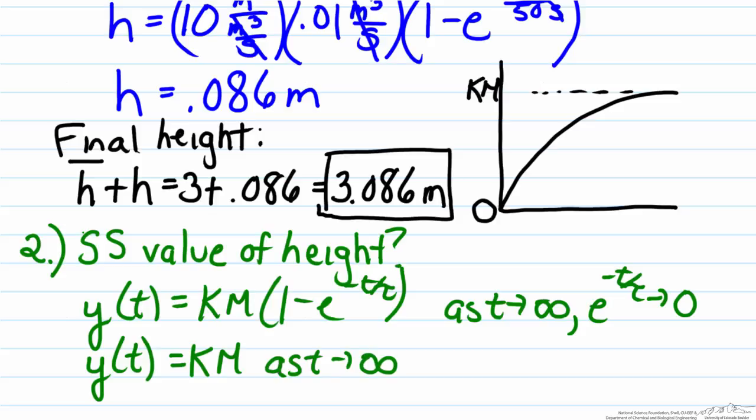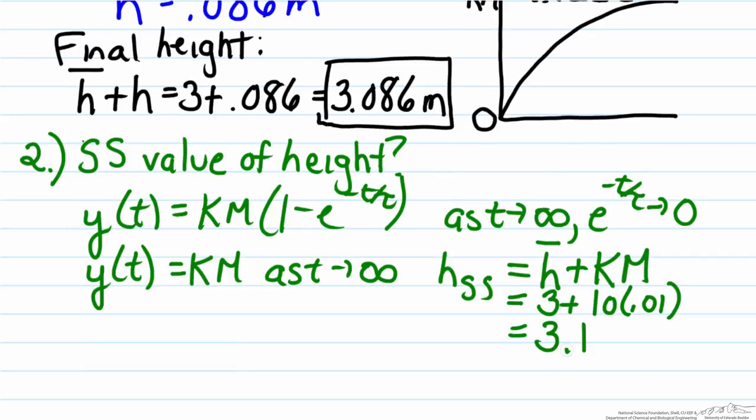In other words y is going to equal k m as t approaches infinity. So what that means is that our steady state height is going to equal our original starting height h bar plus k m. So here that will be 3.1 meters.